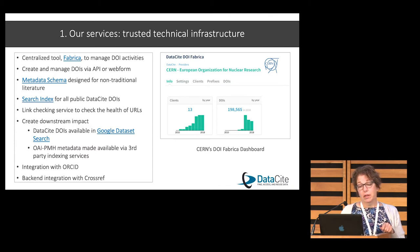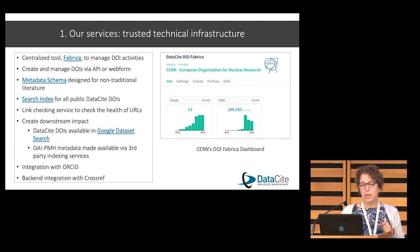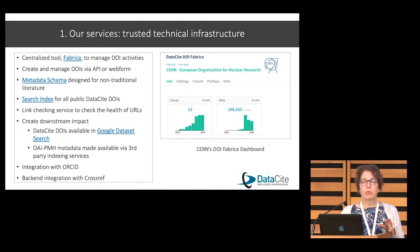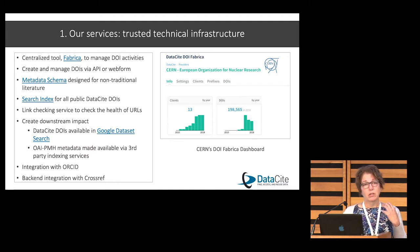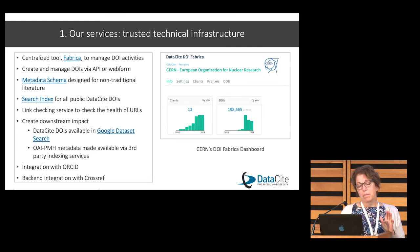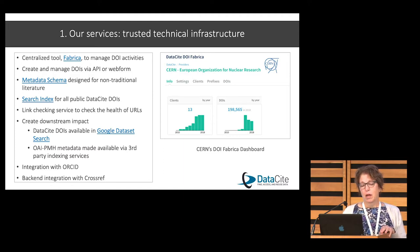One thing that really makes us different from Crossref is our metadata schema. It's really designed for non-traditional literature — not for article publications. Once people create a DOI, we have a publicly available search index, and a link checking service to check the health. This is particularly important when working with repositories around the world that change and might not have a lot of funding. We also make a big emphasis on creating downstream impact and exposing our metadata as far and wide as possible. Most recently, we have a Google Dataset Search.